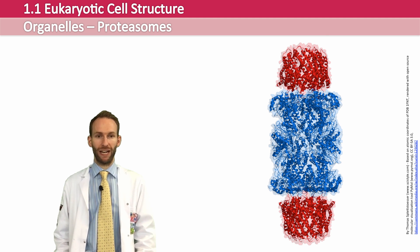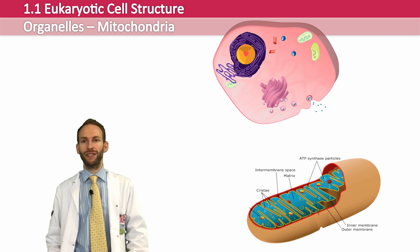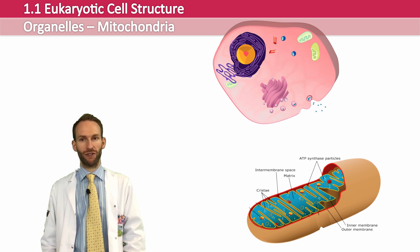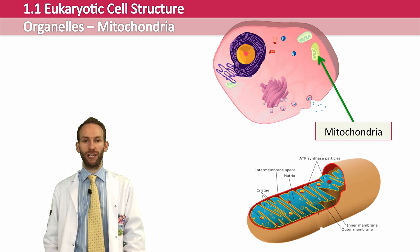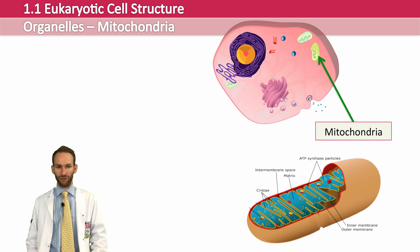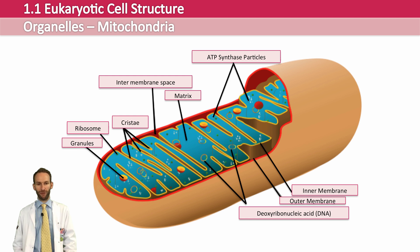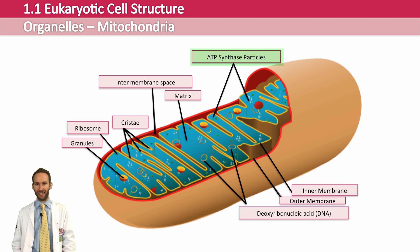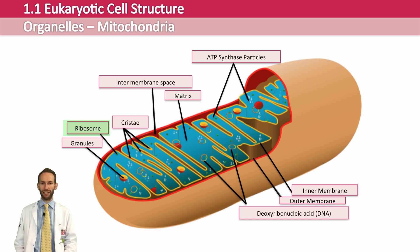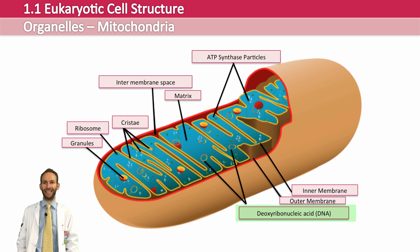Mitochondria are a very important organelle — like the batteries that power the cell. The cell needs ATP to carry out its metabolic processes, and mitochondria are where the majority of this ATP is produced in cellular aerobic respiration. Cells that need more ATP have more mitochondria. They are capsule-shaped or spherical, with a double membrane. The inner membrane is filled with a fluid called the matrix, and is highly folded into cristae to provide a large surface area with ATP synthase enzymes embedded in it. Mitochondria also have their own 70S ribosomes and a small amount of mitochondrial DNA.